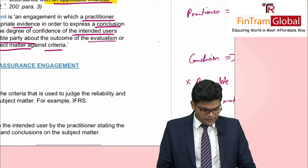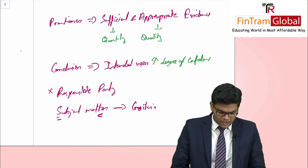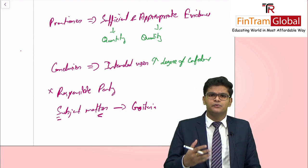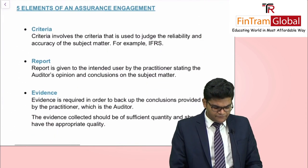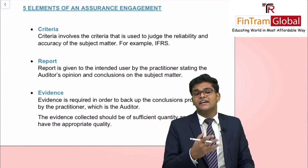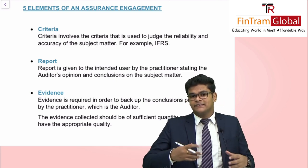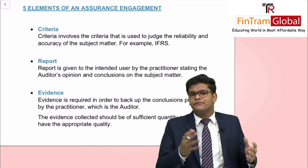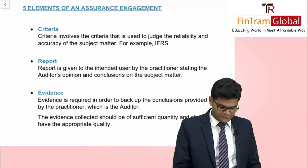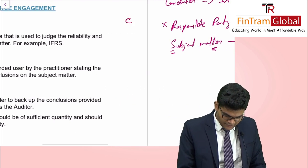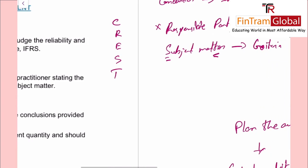We learned about three parties: the practitioner — basically the auditor; the intended users — the users of the financial statements; and the responsible party — the management. To memorize the five elements of assurance engagement, I've prepared a memory aid: CREST — C-R-E-S-T.